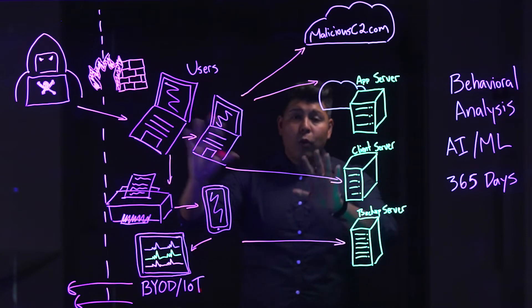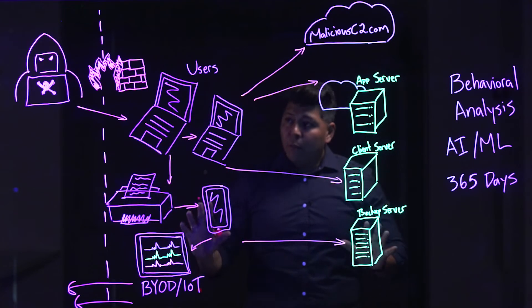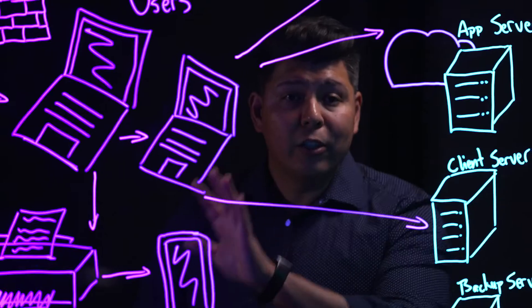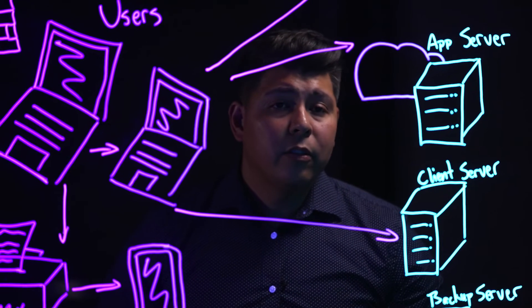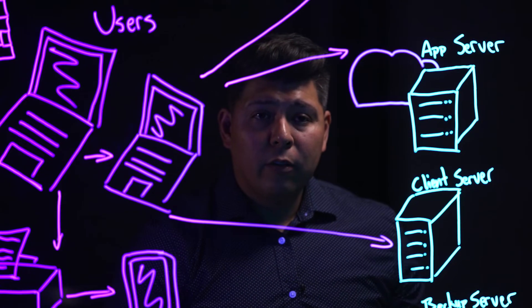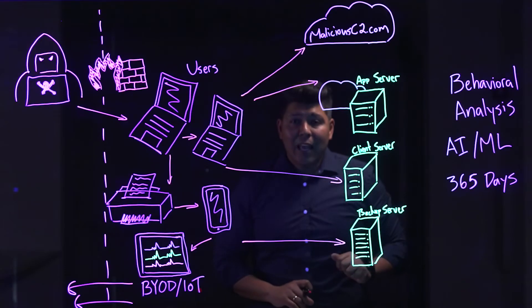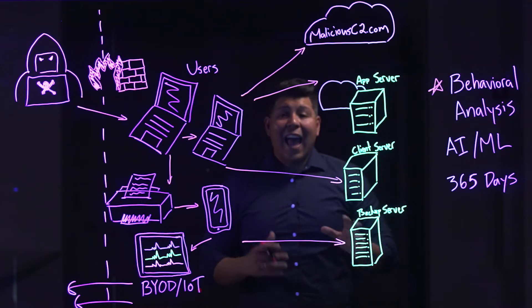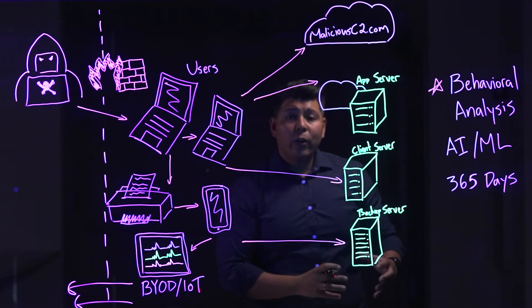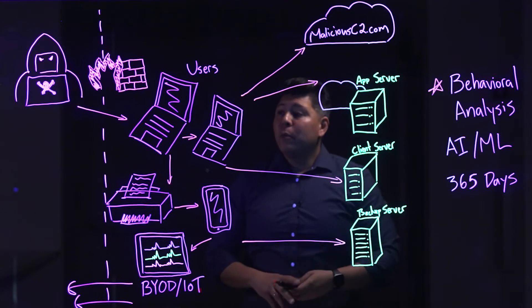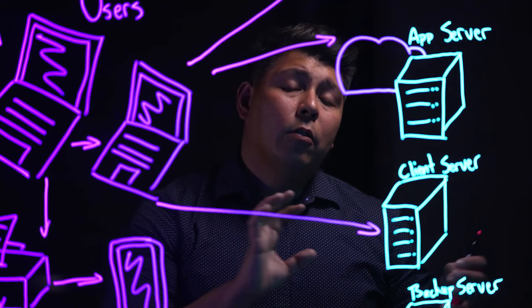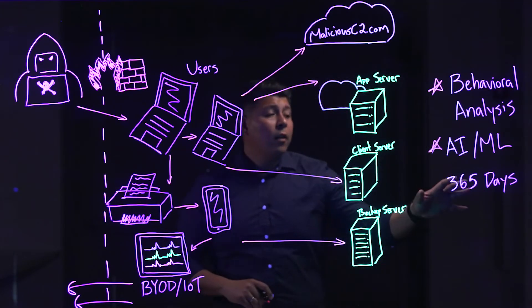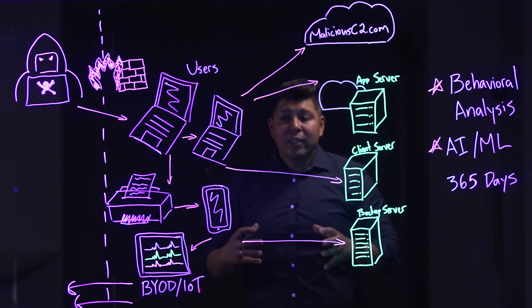Visibility into all of this is the first step. But you need a tool that allows you to detect and differentiate between malicious, anomalous, and just normal everyday network traffic. You need a tool that conducts behavioral analysis on that traffic. You need something that has the AI and machine learning capabilities to differentiate between what could be normal traffic and what could be malicious traffic.